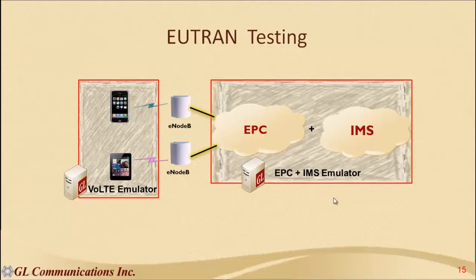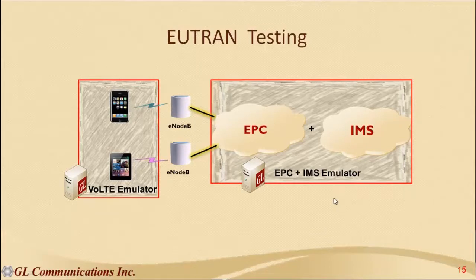Looking at E-UTRAN testing, this essentially tests only the E-NodeB. Several features have been added to E-NodeB to support VoLTE — including semi-persistent scheduling, TTI bundling, and ROHC. These functionalities come with their own complexity, and it is important to test E-NodeB for voice services when these features are enabled. The main aim is to test voice quality when high data rate background traffic is also flowing simultaneously. GL's VQT testing can be used to find degradation in voice quality.